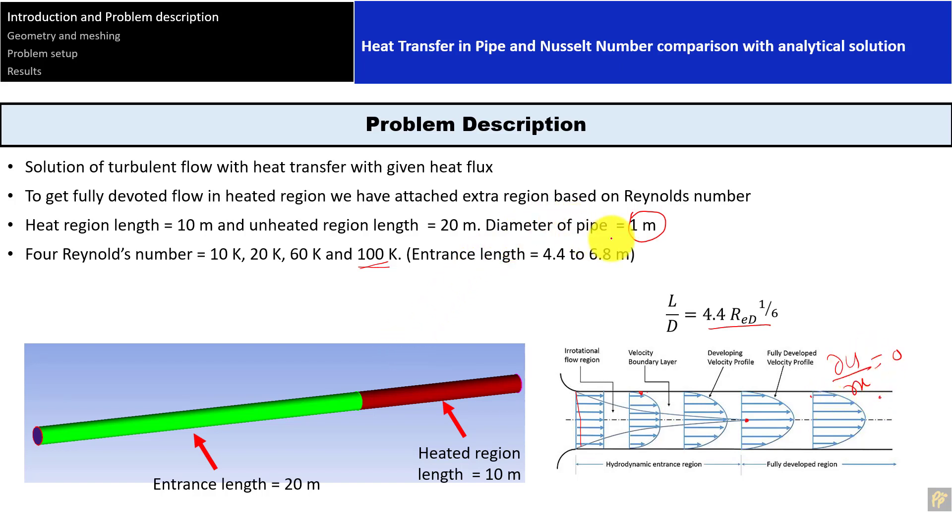To be on the safe side, I provided the entrance length as 20 meters, and this would be the unheated region. Once the flow is fully developed, then if you apply heat transfer, we can only get the effects of heat transfer. Otherwise, if you apply it from the beginning, we get mixed effects of flow development as well as heat transfer. That's why we have to provide some unheated region where the flow will be developed and we get the velocity profile like this for turbulent flow. For laminar flow, this would be parabolic.